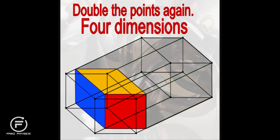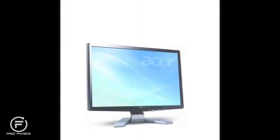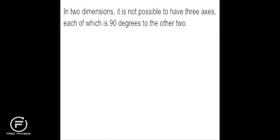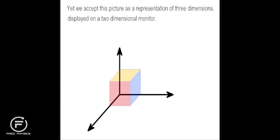Skeptical? You are watching this on a flat two-dimensional computer monitor. In two dimensions, it is not possible to have three axes, each of which is 90 degrees to the other two. Yet we accept this picture as a representation of three dimensions displayed on a two-dimensional monitor.